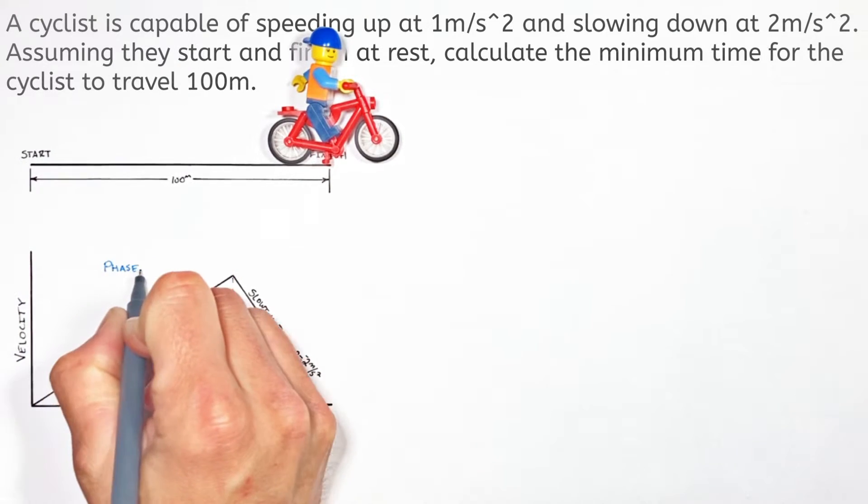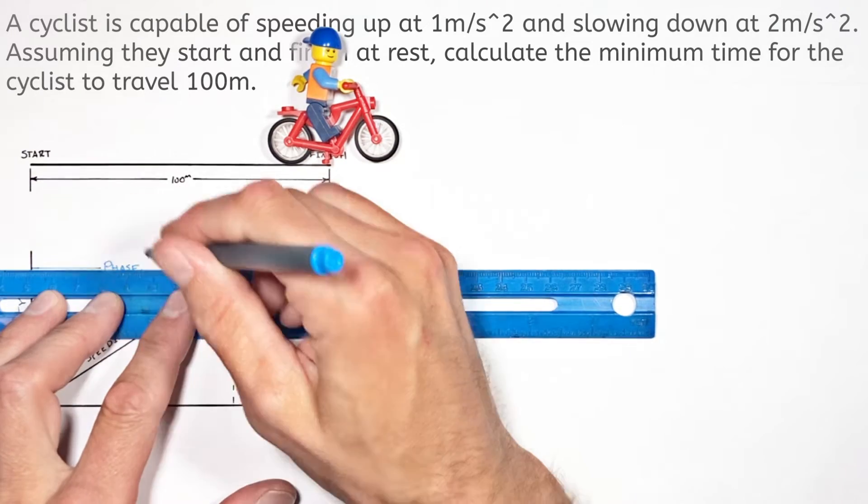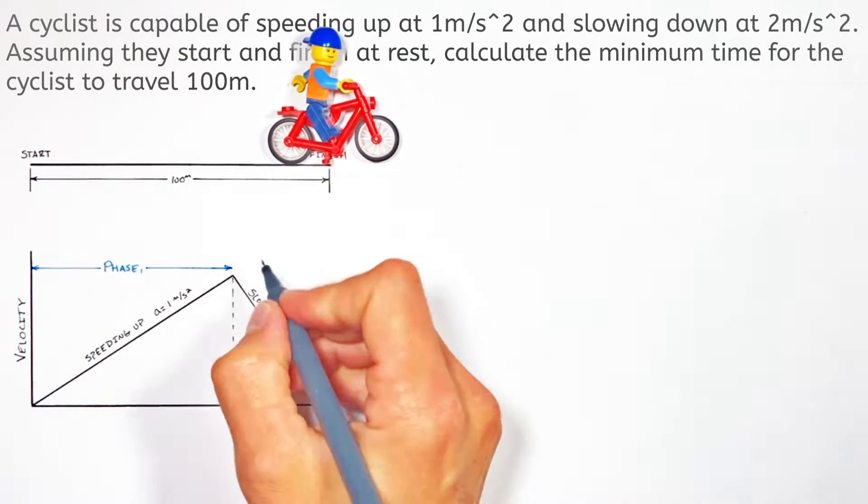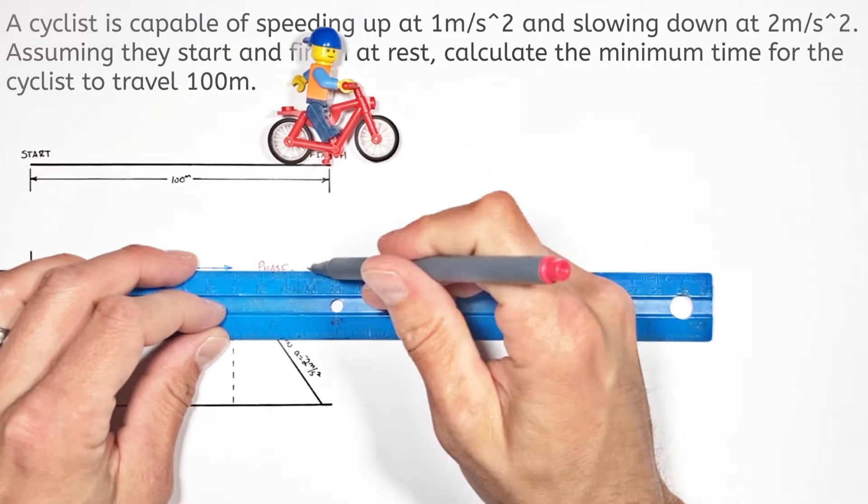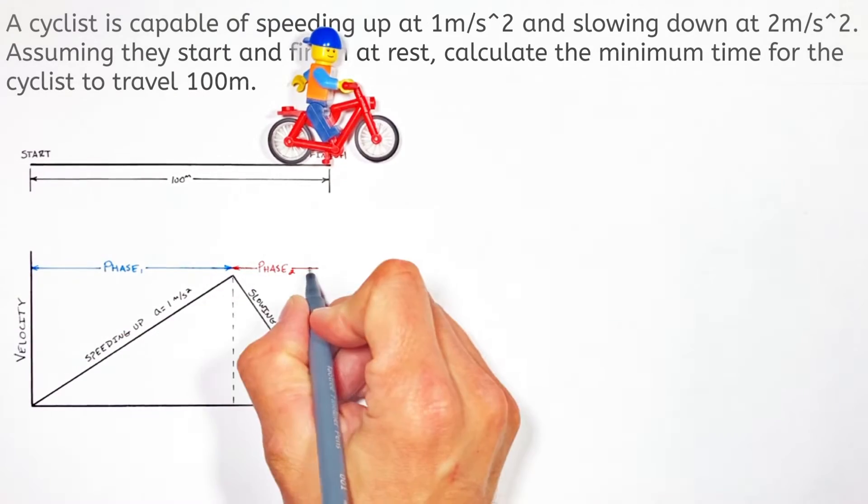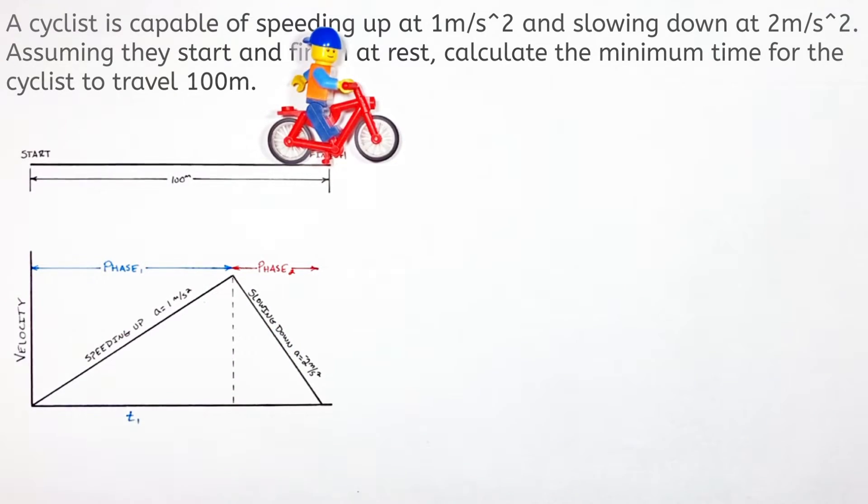Now the motion of our dude on a bike can be broken up into two phases. The first phase where he's speeding up, and the second where he's slowing down. Now we don't know how long either of those phases are going to take, so let's just say this phase 1 is going to take some time t1.